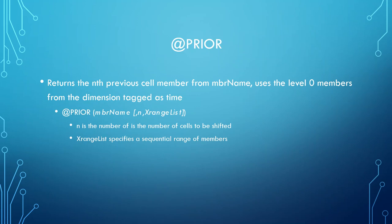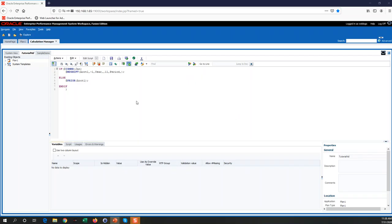If you use a positive number it will shift backwards because it's @PRIOR. But if you use a negative number it will simulate the same thing as @NEXT, which is another function, and what it does is it goes forward. And then x range list specifies the sequential range of members that you can use, so you can use multiple different members. Now let's look at some examples.